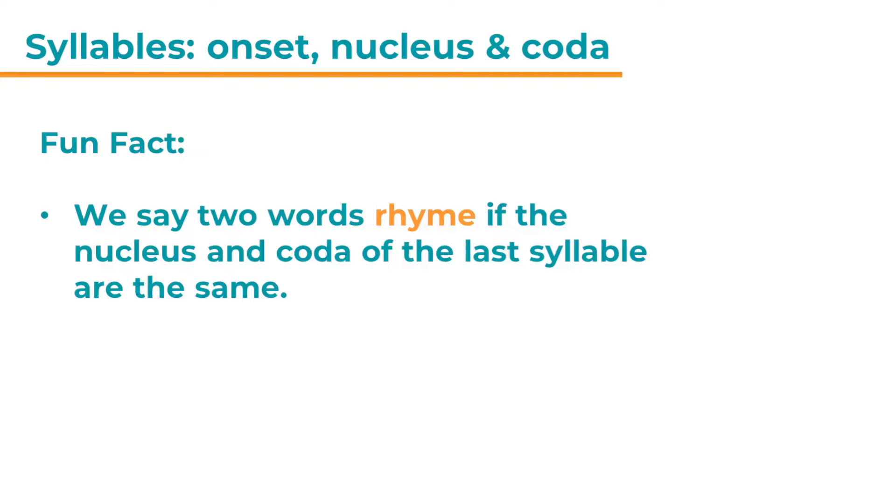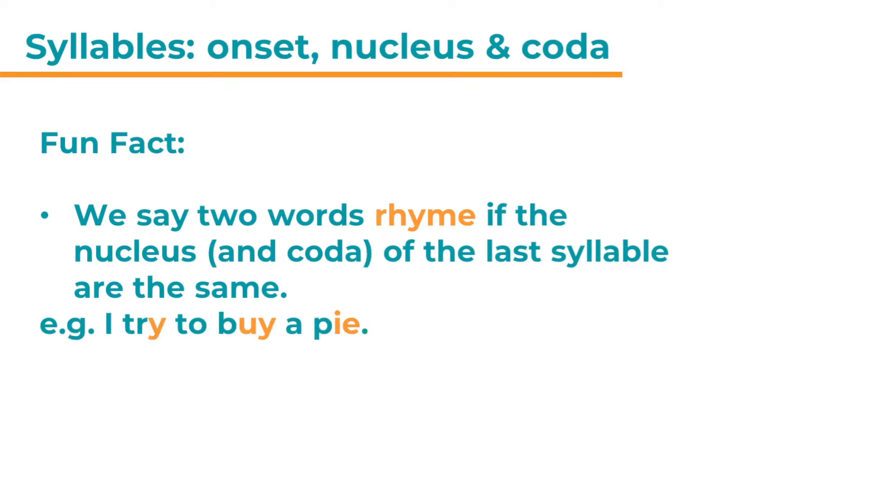And here are some fun facts about syllables and their structure. First of all, if we say two words rhyme, that really means that nucleus and coda of the last syllable are the same. So, for example, here, I try to buy a pie. So we have try, buy and pie. All of these words end in I. They're actually open syllables. They don't have a coda. And so they rhyme, although the spelling looks very different.